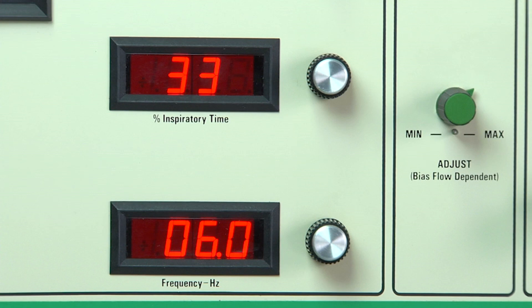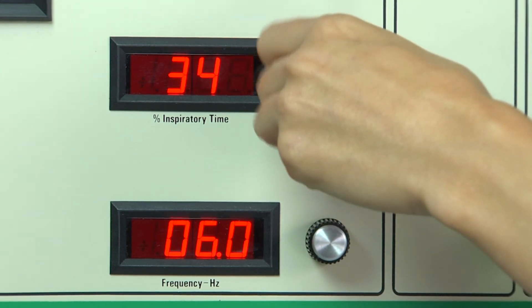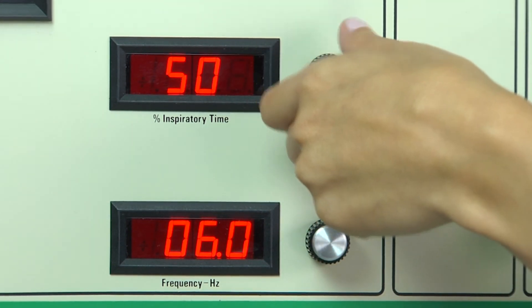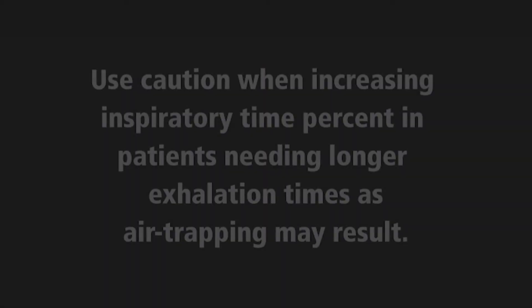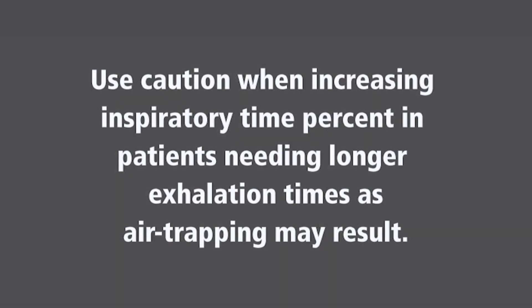Inspiratory time percent sets the relative duration of the successive positive and negative polarity voltages from the square wave driver. Since this parameter is set as a percent of cycle time, absolute inspiratory time is a function of oscillatory frequency and inspiratory time percent. For most applications, this parameter remains at 33%. In applications where the patient presents with refractory hypercapnia in the face of maximum ventilatory support, increasing the inspiratory time percent may improve ventilation and lung recruitment. The effect is most pronounced at lower frequencies. Use caution when increasing inspiratory time percent in patients needing longer exhalation time, as air trapping may result.